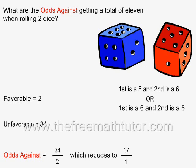This means that the number of favorable cases is equal to 2. Since there are 36 different things that can happen, the number of unfavorable cases is equal to 34.